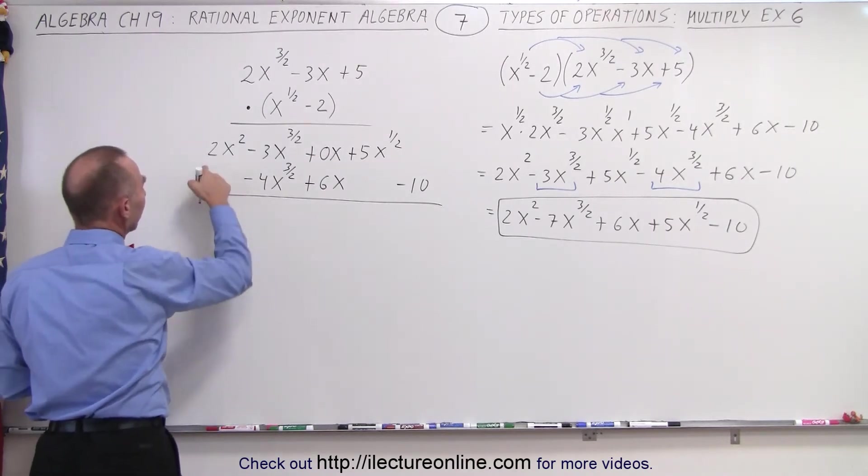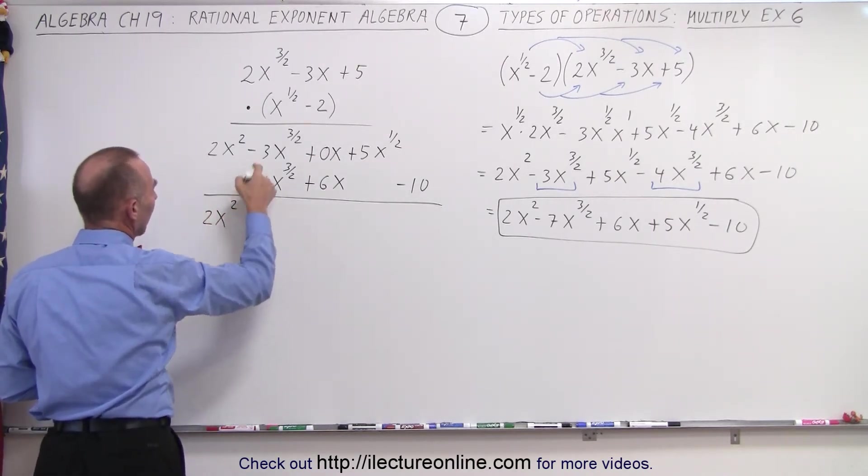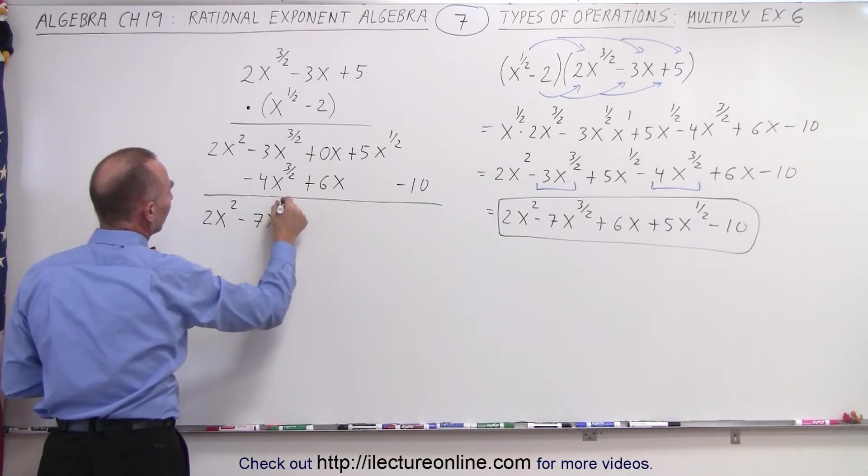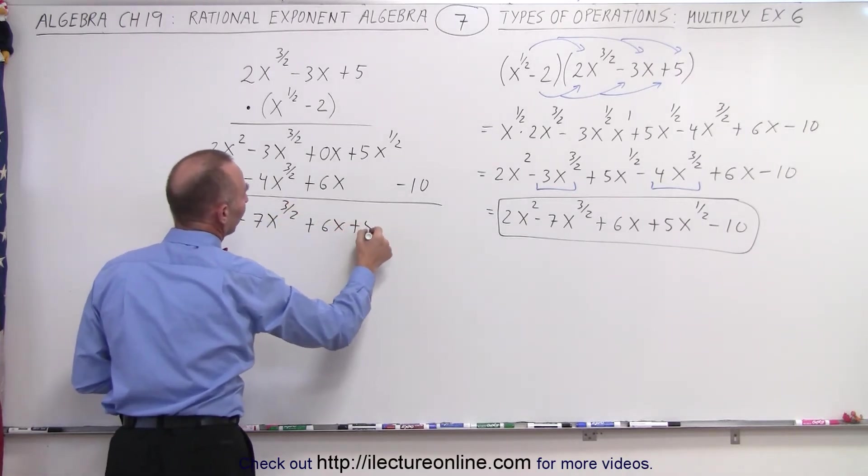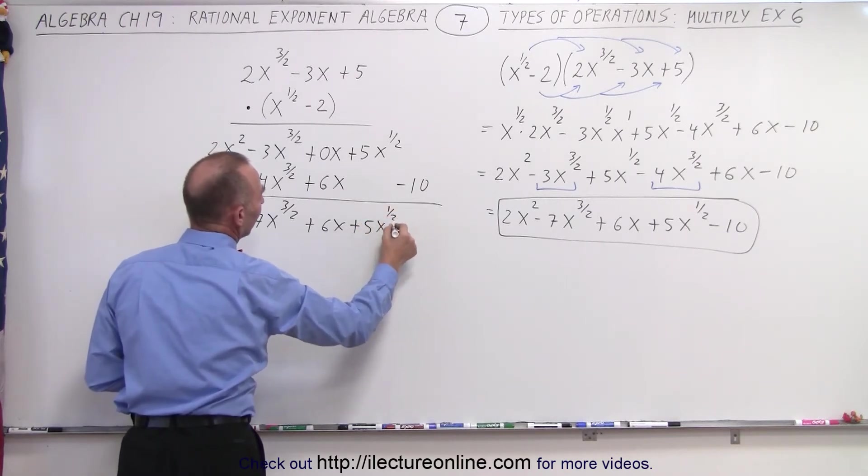So now we can add them together. So we get 2x squared, minus 7x to the 3 halves, plus 6x, plus 5x to the 1 half, and minus 10.